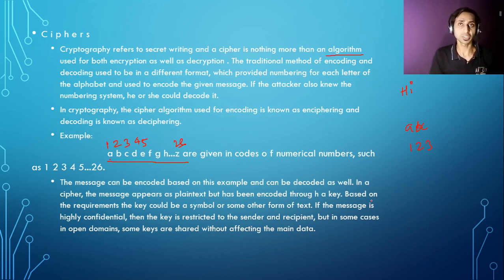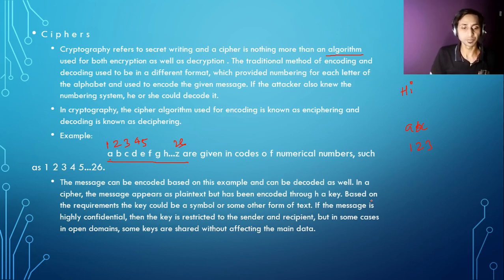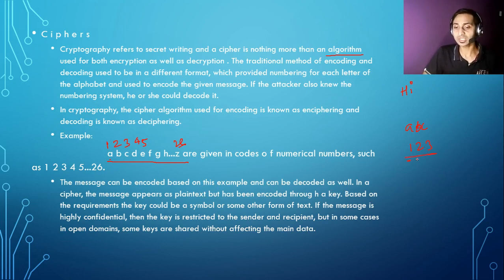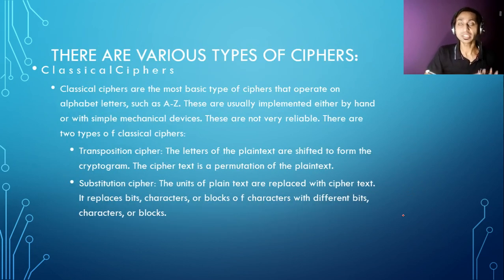Nowadays there are many different types of cipher mechanisms which people and companies use. A message can be easily encoded based on any method, and decoded as well using the same method. So whoever the receiver is, they will also use the same method — if the data received is 1, 2, 3, the plain text is going to be A, B, and C. Now when we talk about the classification of ciphers in the classical way, there are two types: one is transposition and one is substitution.